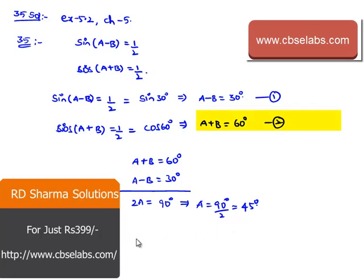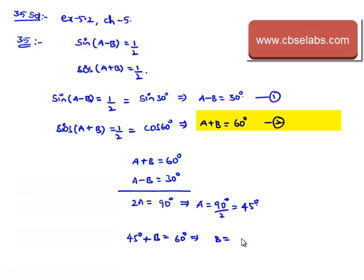Let us substitute this in equation number 2, then we get 45 degrees plus b is equal to 60 degrees, which implies b is equal to 60 minus 45, that is 15 degrees.